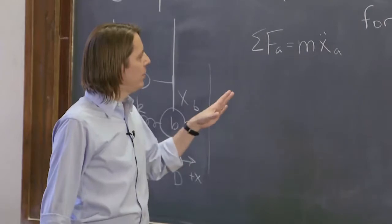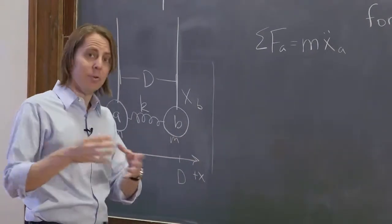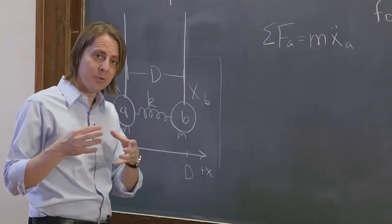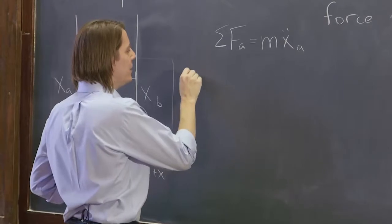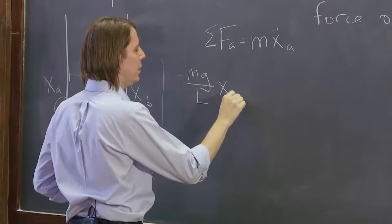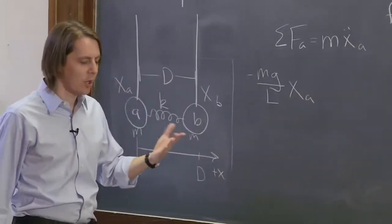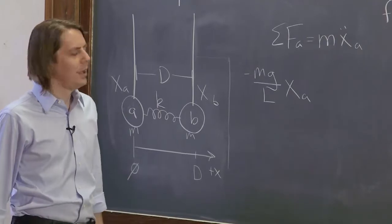All right. So let's see if we can figure out what are all the forces on A. Well, one force on A is just the pendulum force, sort of the restoring force you get from the small motion of a pendulum. It's minus mg over L times the position of A. So if you work out the equation of motion for a pendulum, that's kind of like the force pulling the pendulum back.